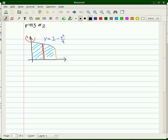I'm going to work through the solution to number 2 on page 443, where we're going to use the method of cylindrical shells to find the volume of the solid generated by taking this region and rotating it around the y-axis.